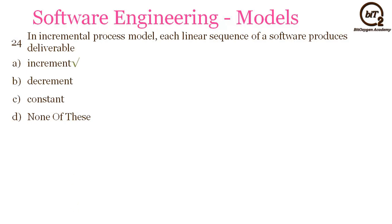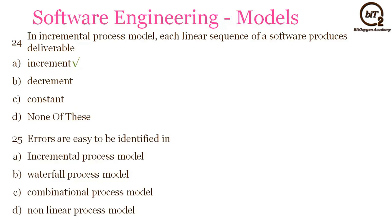The next question is: errors are easy to be identified in — incremental model, waterfall, combinational, or non-linear process? Errors can be identified easily in the incremental model and can be changed in the next version or increment. So the answer will be incremental model.